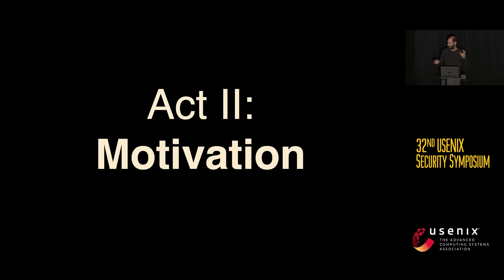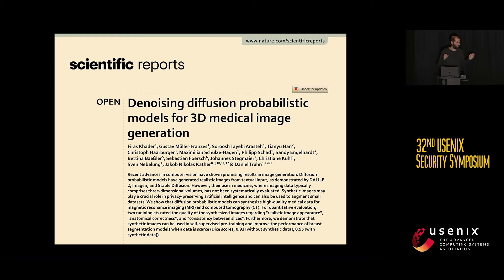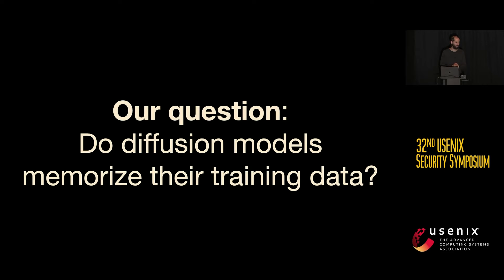So why are we interested in diffusion models at a security conference, not a machine learning conference? These kinds of neural networks are being deployed in all kinds of sensitive domains — we have diffusion models being trained on medical images. The concern is that if you train these kinds of models on sensitive records, you really want to make sure that you don't accidentally leak the training data if you publish the model. You don't want to publish a model trained on patient data and then accidentally reveal patient data to anyone who has access to the model.